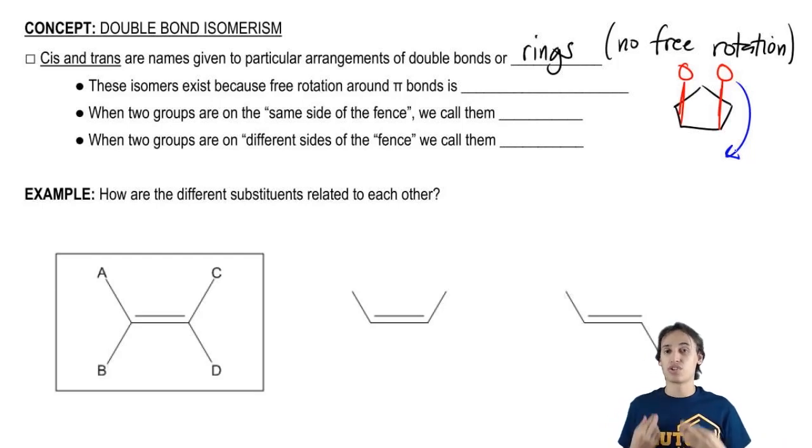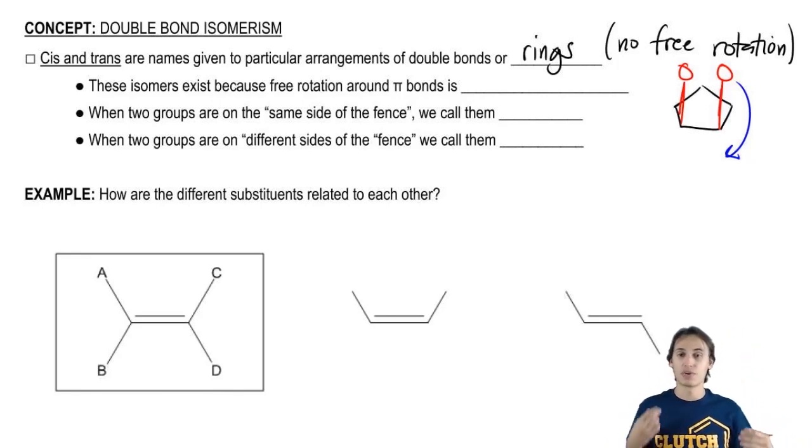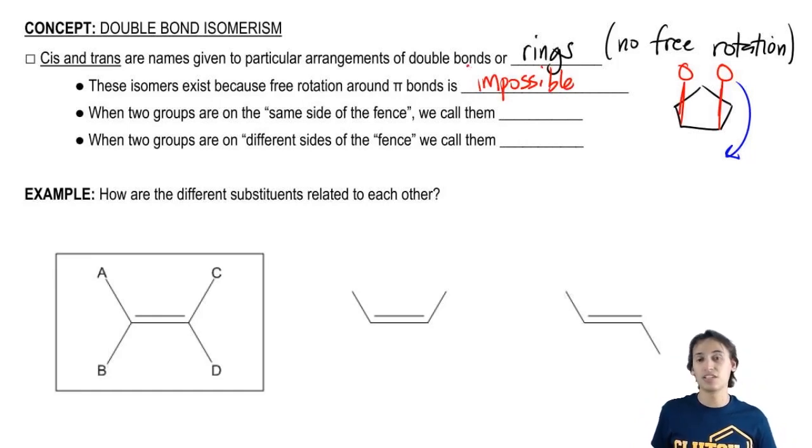So cis and trans are the words that we use for these arrangements that are stuck together. And like I said, these isomers exist because free rotation around pi bonds is impossible. Basically, the way that this works is that when two groups happen to be on the same side of the fence – I'm going to talk about that in a second – when they're on the same side, that's going to be cis. When they're on different sides of the fence, that's going to be trans.